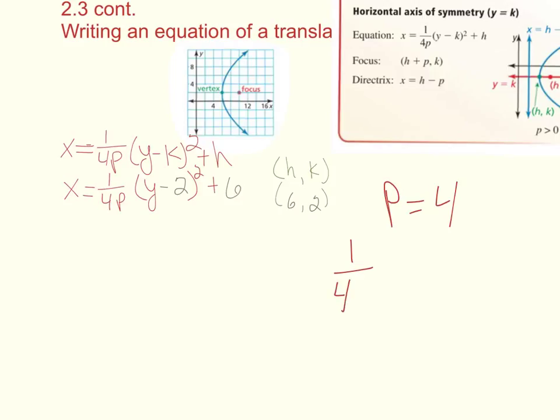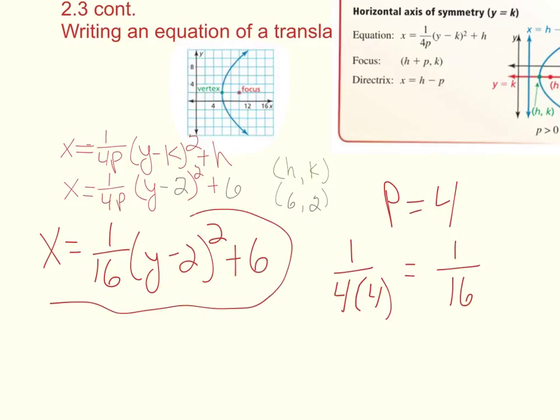Remember, the whole thing, 1 over 4 times p is our a value. So I take that and just plug it back in. So this right here is my a value, 1 over 16. So my equation, just have to rewrite it, is x equals 1 over 16, y minus 2 squared plus 6. There's a lot of different steps to this, but rewind this, go through it, make sure you understand it.